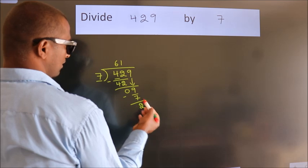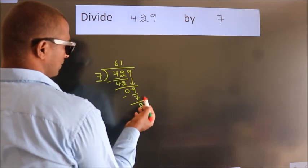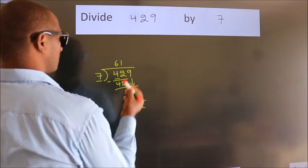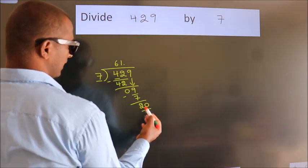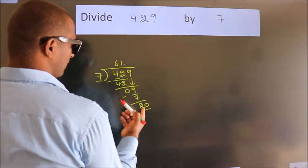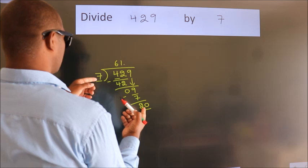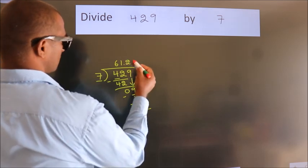After this, no more numbers to bring it down. So what we do is, we put dot, take 0. So 20. A number close to 20 in 7 table is 7 times 2, which is 14.